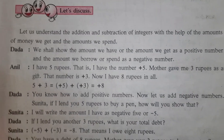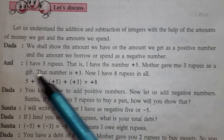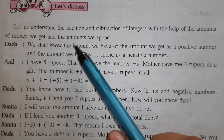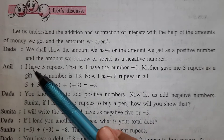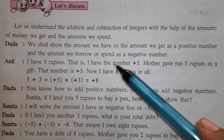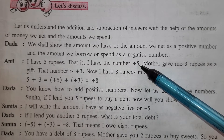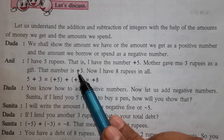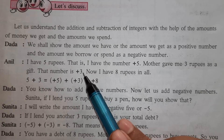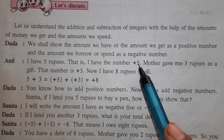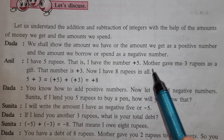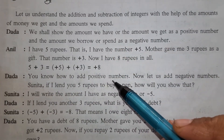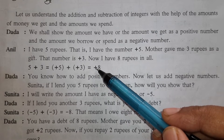Now some more things are discussed in the form of money. I have 5 rupees — that is positive 5. Mother gave me 3 rupees as a gift — that is plus 3. Jab hume koi paise deta hai ya humare paas koi paise hai, so that number we write in the form of positive. So first I had 5, mother gave me 3, now I have 8 rupees in all. When both numbers are positive, directly do addition and put a positive sign in the answer.